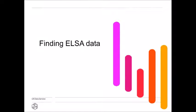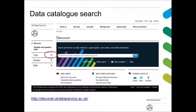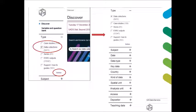How would you go about finding ELSA data in our catalog? You have three options. One is to use a key data search. Here, you would click on Get Data, then on the left-hand side select Key Data, click on Longitudinal Studies, and scroll down to find the ELSA data. Another possible option is to use a data catalog search, where you would select the type and specify data collections, then also type the title, and you would find it.